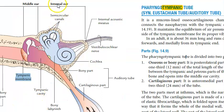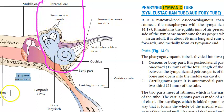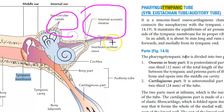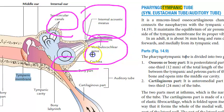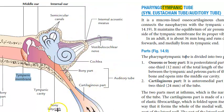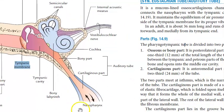Now let us move on to the internal ear. In the internal ear you have the bony labyrinth, the internal acoustic meatus, semicircular canals, vestibulocochlear nerve, cochlea, and the bony and cartilaginous parts of the auditory tube leading to the nasopharynx.